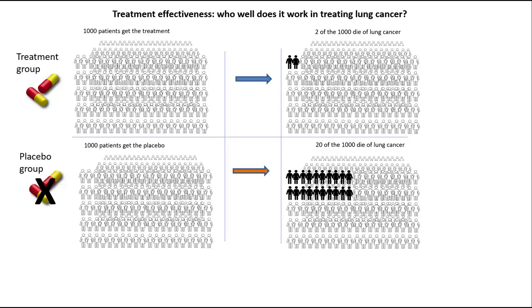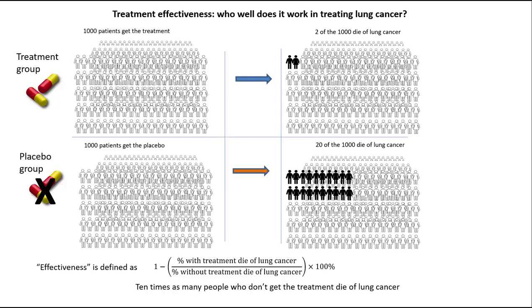Then it seems the treatment is highly effective — 10 times as many people who don't get the treatment die of lung cancer than those who do. Formally, effectiveness is defined as 1 minus the percentage who get the treatment who die of lung cancer divided by the percentage who don't get the treatment who die of lung cancer, times 100. When we plug in the numbers, that's 90%, easily surpassing the usual 70% threshold for such trials.